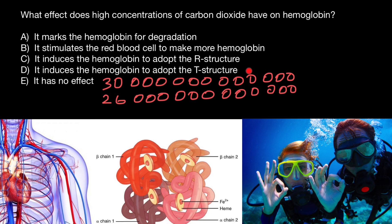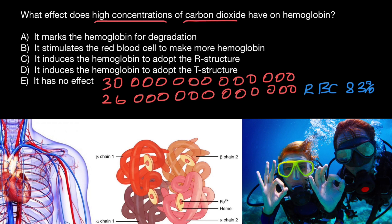Isn't it mind-blowing that we have 30 trillion cells total and 26 trillion of them are red blood cells? We have about 200 different types of cells, and just one type makes up 83% of all our cells. All 26 trillion circulate through the bloodstream, pumped by the heart through the lungs and body every 60 seconds. So the suggestion that higher CO2 would mark hemoglobin for degradation is absurd — in that scenario, we would live no longer than 60 seconds.